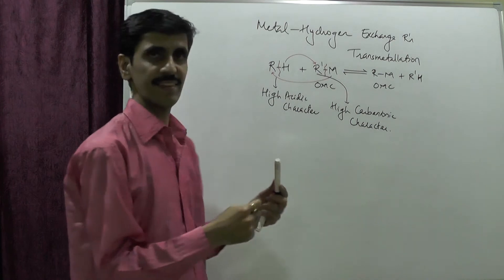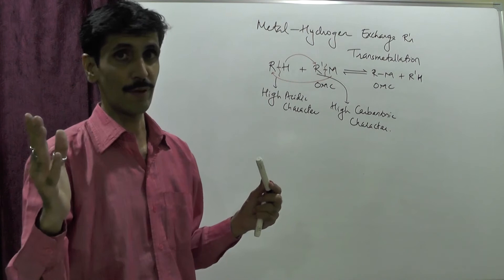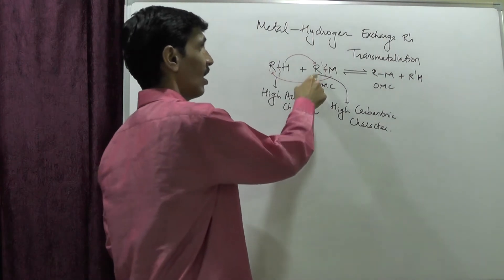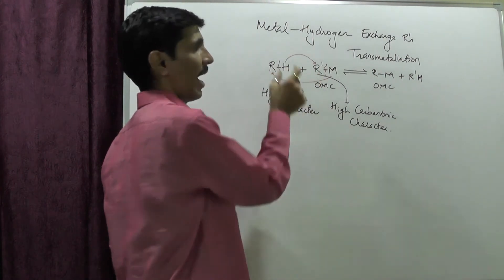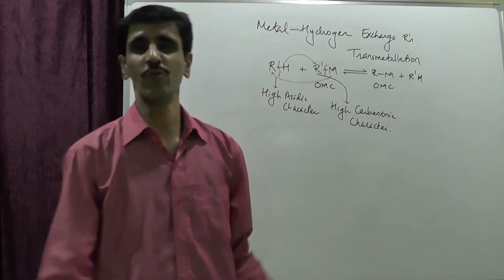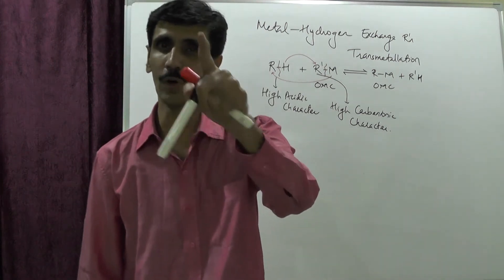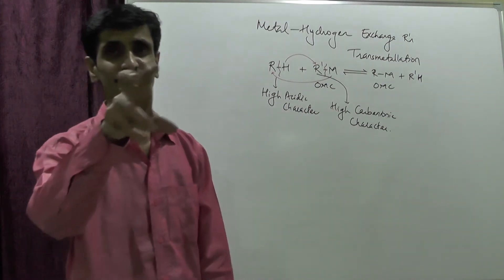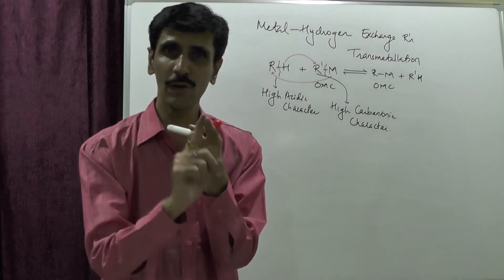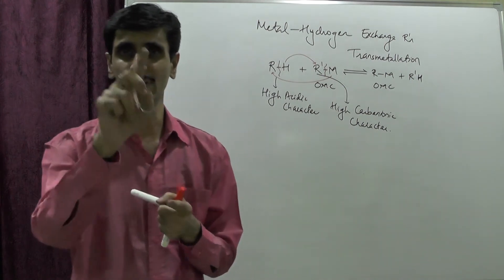At the same time, the hydrocarbon moiety of the organometallic compound should have a high carbanion character. So it will be in the form of R' minus. Both will combine very fast, resulting in the formation of R'H, and we are left with what we are preparing — the organometallic compound R'M. This is a nucleophilic attack of the hydrocarbon of the organometallic compound on the hydrogen of the organic compound.